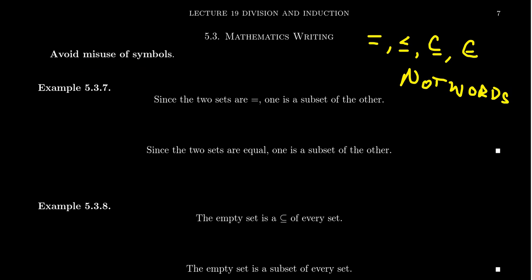Consider this sentence: "Since the two sets are = one is a subset of the other." Can a set be an equal sign? That's not what that symbol means. Clearly what's happening here is the writer is using the equal symbol in place of the word equal itself. This is completely bad form. Instead, we should use the word instead of misusing the symbol. We should write it out as: "Since the two sets are equal, one is a subset of the other." That would be a more correct sentence.